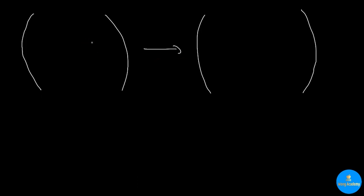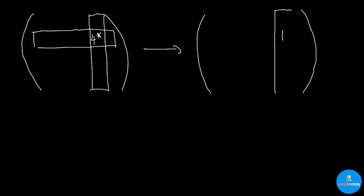In pivoting, there is always one entry called the pivot entry, often denoted by a star or an asterisk. The row that the pivot entry lies in is called the pivot row, and the column that the pivot entry lies in is called the pivot column. The objective of pivoting is to turn the pivot entry into a one and turn every other entry in that pivot column into zeros.